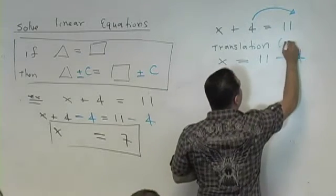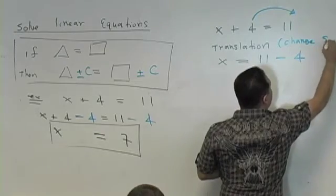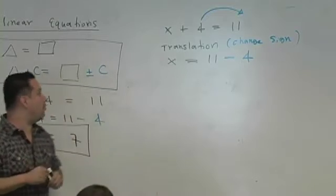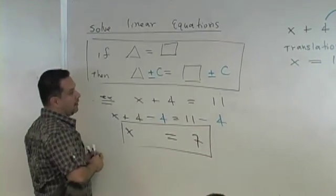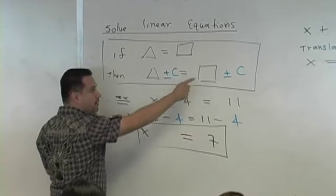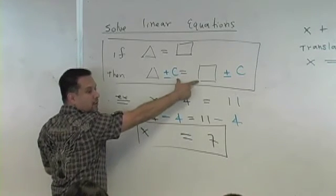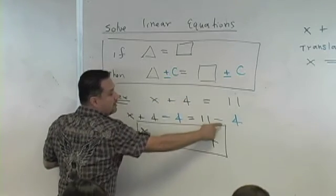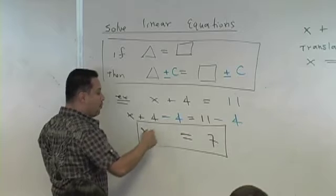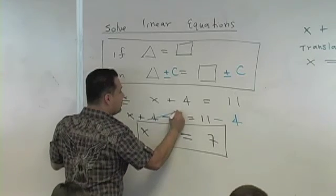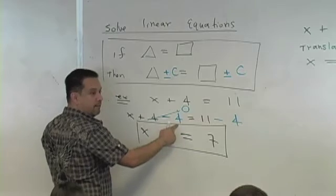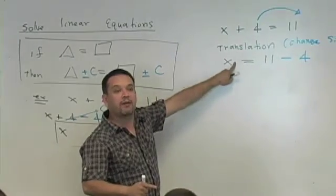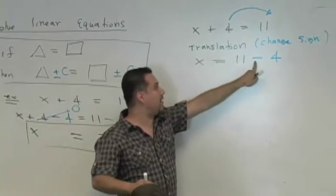Change the sign when you move the term to the other side. Translation is equivalent to what you've already done in math 112 by subtracting both sides the same value. 4 minus 4 here is 0, it's gone. What you have on the right side, 11 minus 4 - isn't that 4 gone here on the left and on the right side don't you have a minus 4?